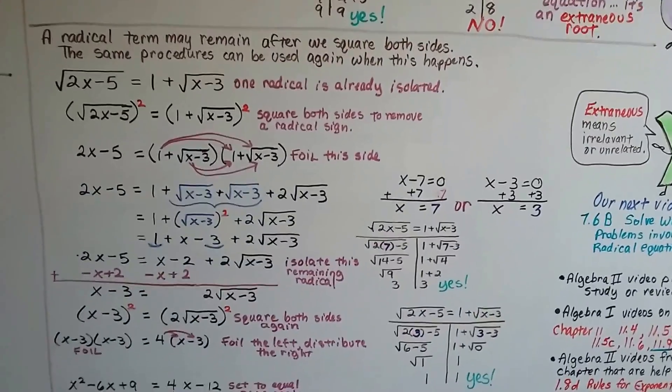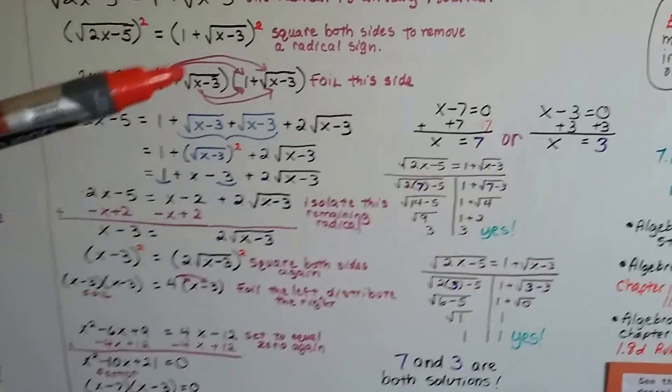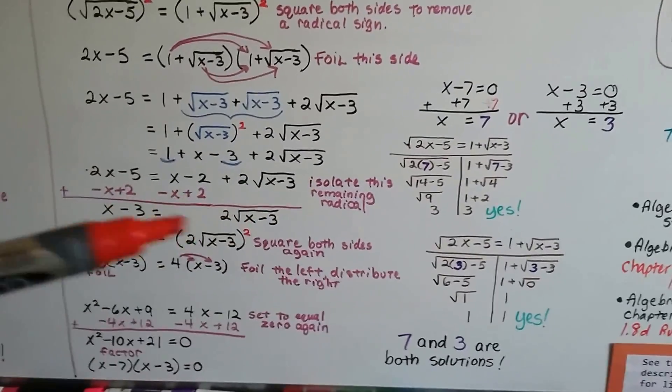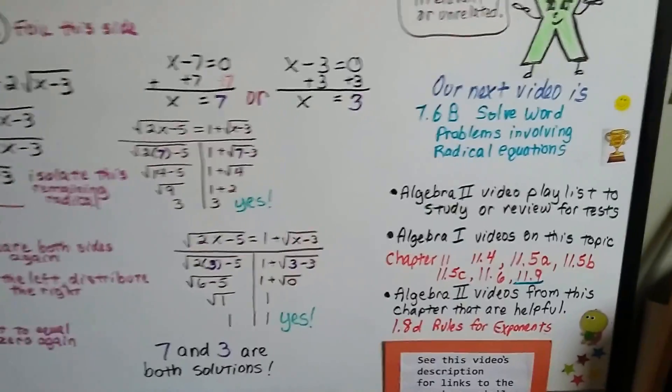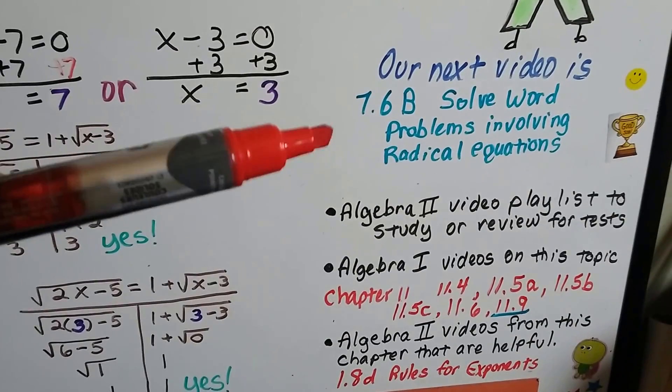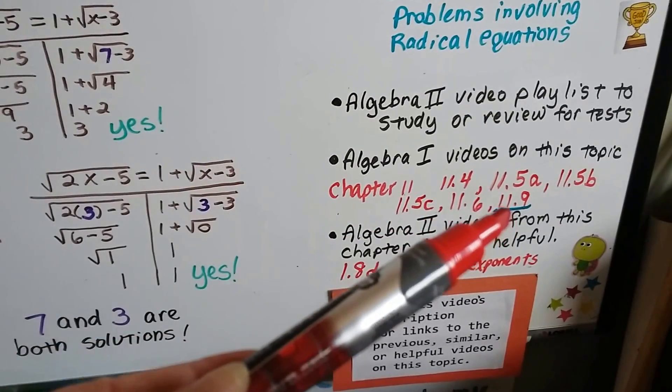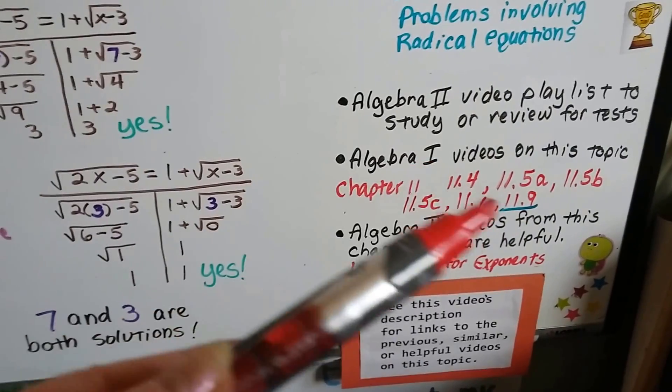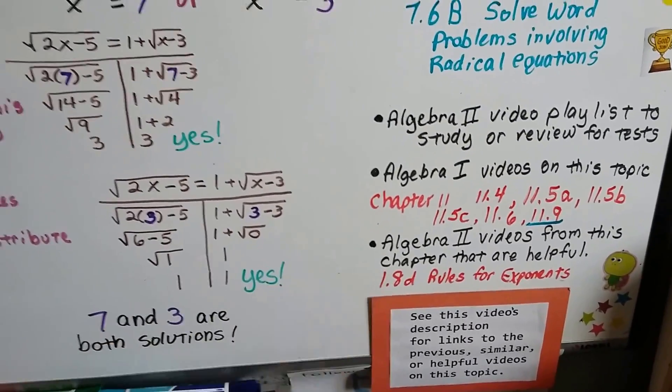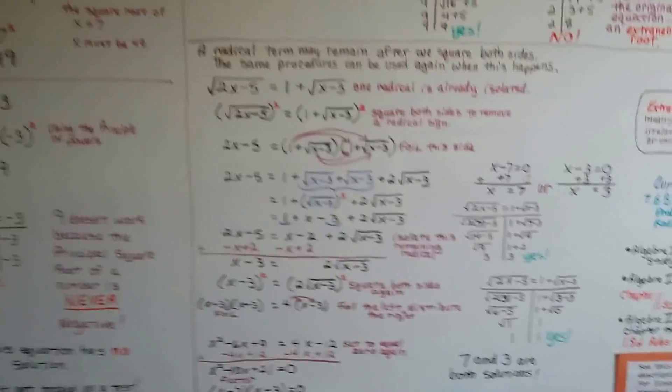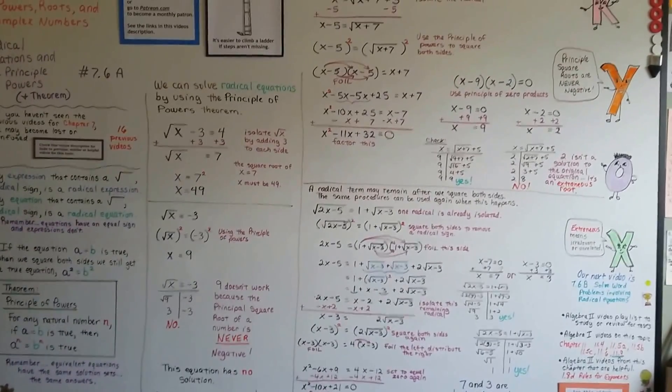Our next video is going to be 7.6b. We're going to actually solve some word problems that involve rational equations. I'm going to add this one to the Algebra 2 playlist like I always do. And 11.9 from Algebra 1, we did rational, I mean radical equations. So you might want to check that one out. And I'm going to put my rules for exponents video in this description along with links to the previous videos for chapter 7. And I know this was a lot I threw at you today, but hopefully by going through every single step you were able to understand what we did.